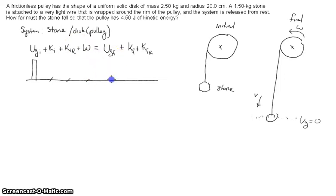Gravitational potential final will equal zero since I'm calling the bottom here UG zero as the final position of the stone. The stone itself will be moving, so it will have some kinetic energy, and the cylinder is spinning, so it will also have some kinetic energy. Our equation we're going to use is UG initial equals kinetic energy final plus kinetic energy final rotational.